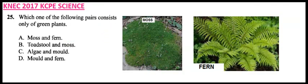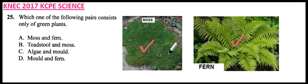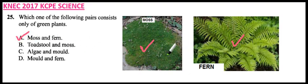This is moss, and this is fern. The question is asking which pair consists of green plants. You can see both moss and fern are green, so we can say A is the correct answer. Both plants are green — moss and fern.